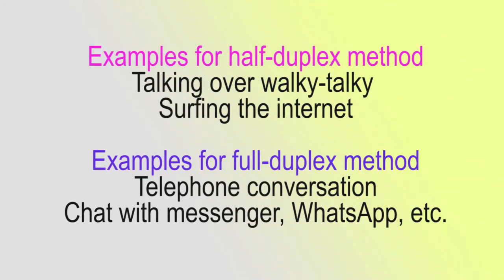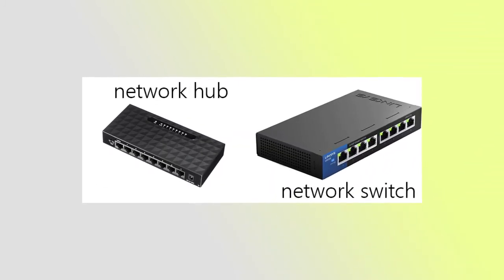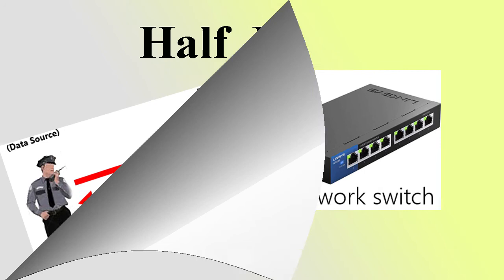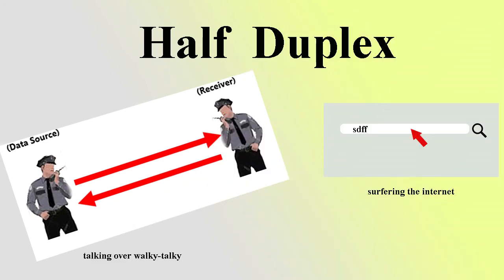Examples of the half duplex method include talking over a walkie-talkie and surfing the internet. Examples of the full duplex method include a telephone conversation and chatting with messenger or WhatsApp.